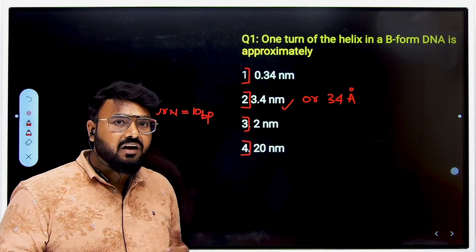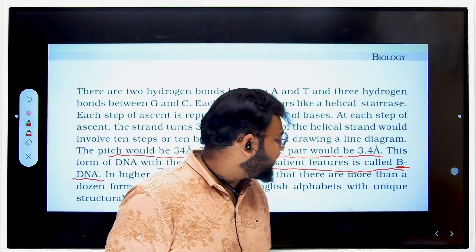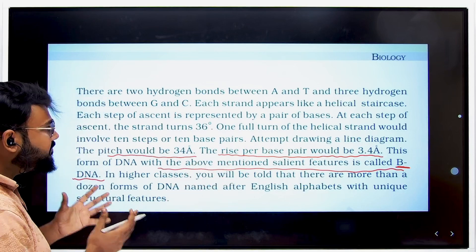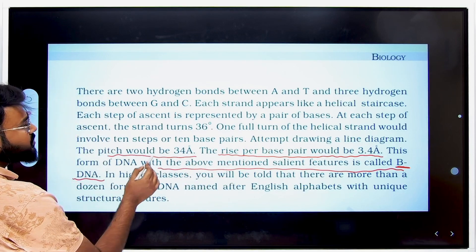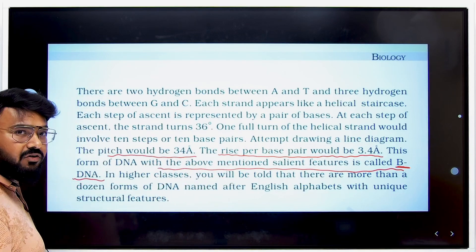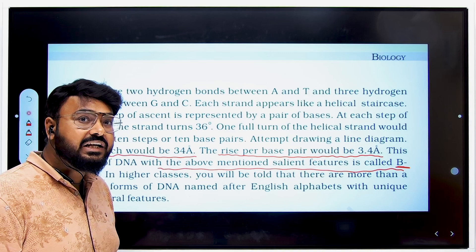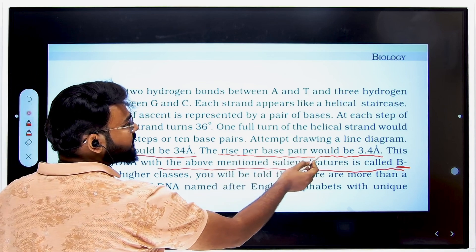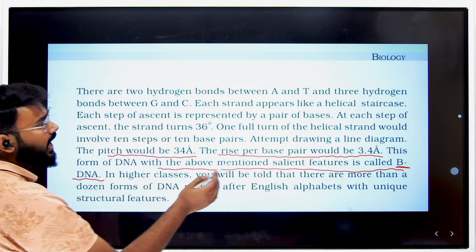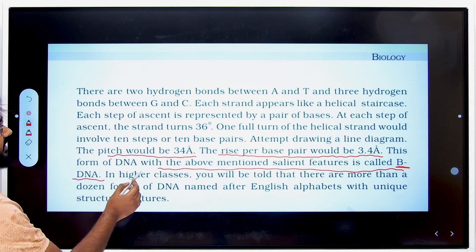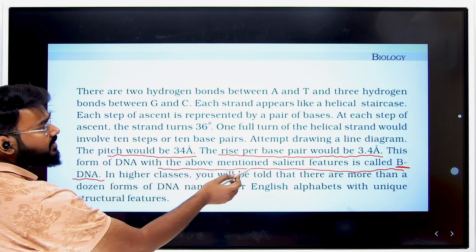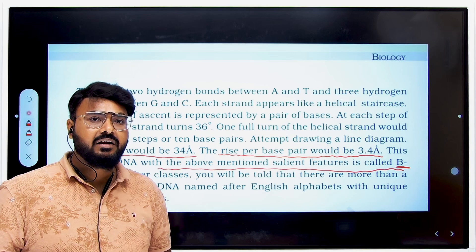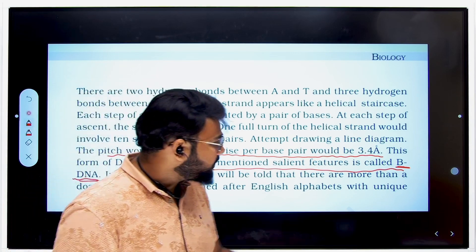For more details, the NCRT clearly mentions that the pitch is 34 angstroms or 3.4 nanometers, and the rise per base pair is 3.4 angstroms. The DNA with these features is called B-DNA, as clearly stated in the NCRT. Now let's see the next question.